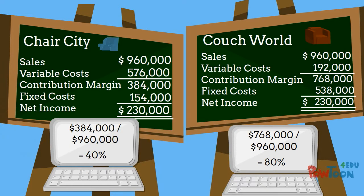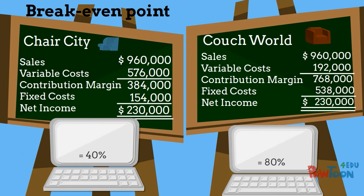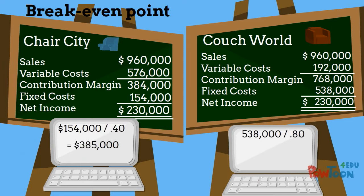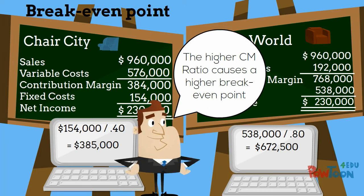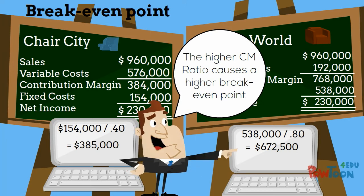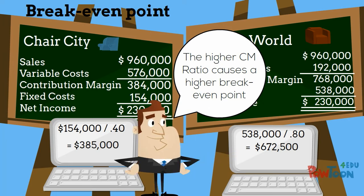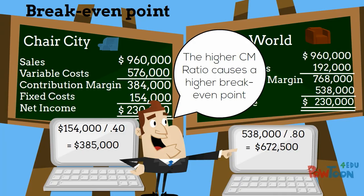The difference is also reflected in each company's breakeven point. The breakeven point for Chair City is much lower than that of Couchworld. The higher contribution margin ratio at Couchworld causes a much higher breakeven point, meaning Couchworld needs to sell more in order to cover those massive fixed costs.